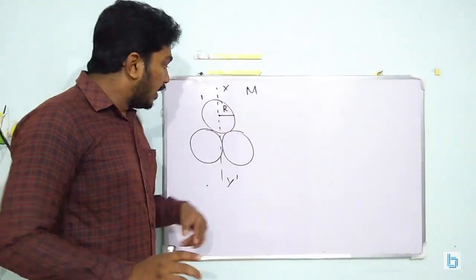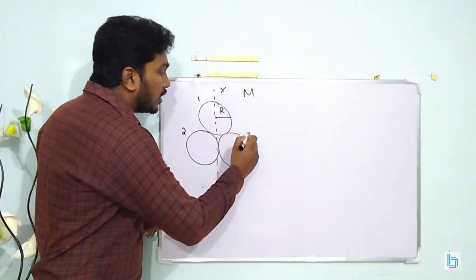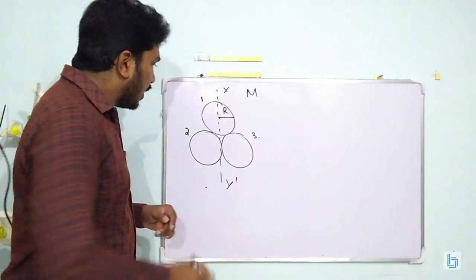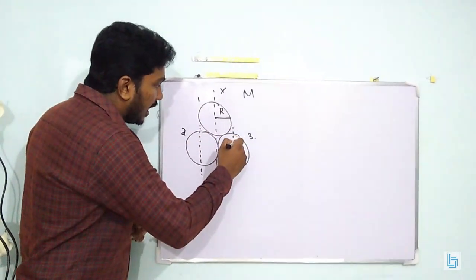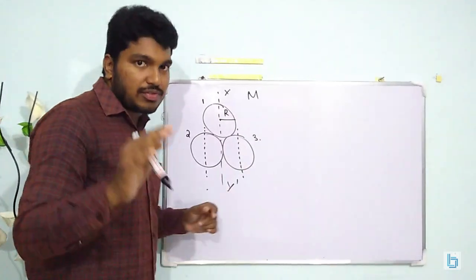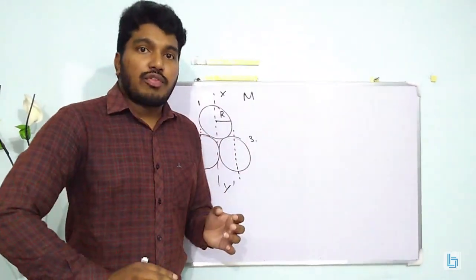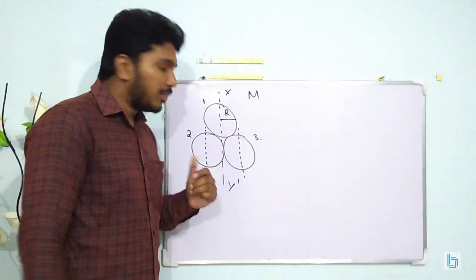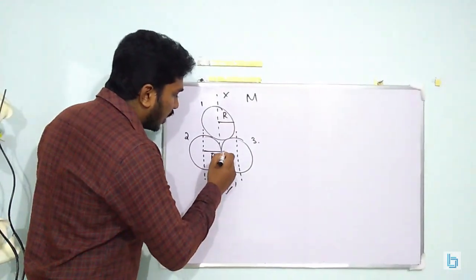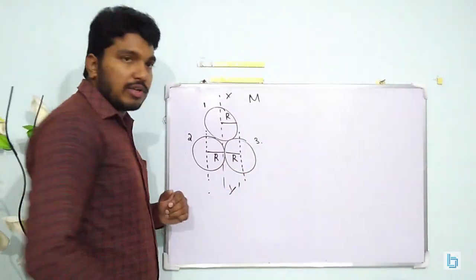But for this ring number 2 and ring number 3, we have to find out what is the moment of inertia about the y y' axis first. Then only we can proceed to find out the net moment of inertia about y y'. Now this distance is actually capital R, and this is also capital R.